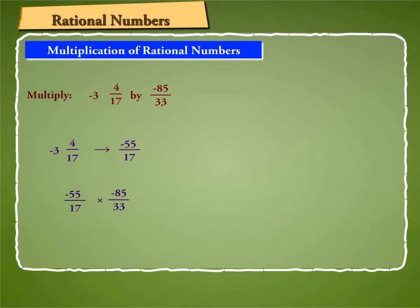We get minus 55 by 17 into minus 85 by 33 or 55 into 85 by 17 into 33. After simplification, we get 25 by 3 or 8, 1 by 3.